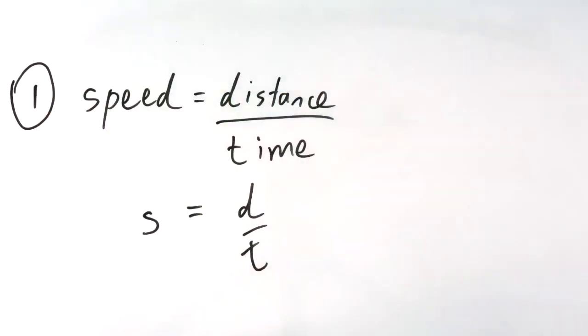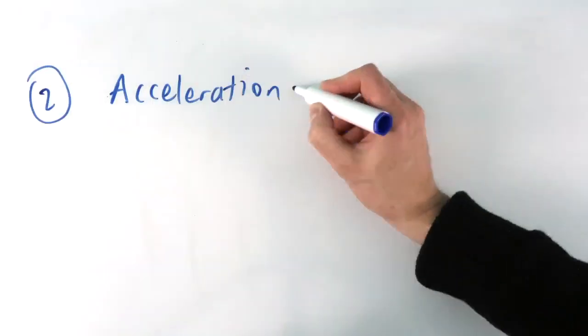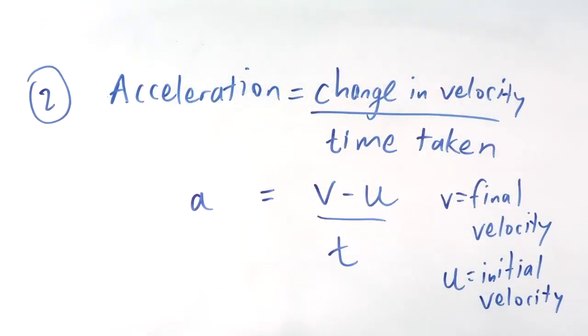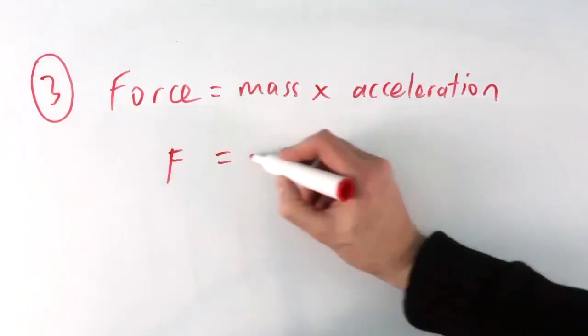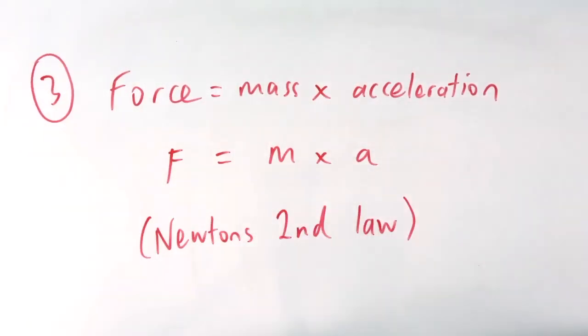Number one, speed equals distance divided by time. Number two, acceleration equals change in velocity divided by time taken for the change. Number three, force equals mass times acceleration. That is Newton's second law.